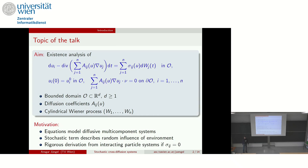The topic is that we want to study systems like the one presented here. We have a system of parabolic equations with diffusion coefficients a_ij depending on U, where U is just the vector of all components u_i. On the right-hand side, we have a stochastic diffusion term sigma_ij. Everything is considered with boundary conditions and initial conditions — here I consider no-flux boundary conditions.